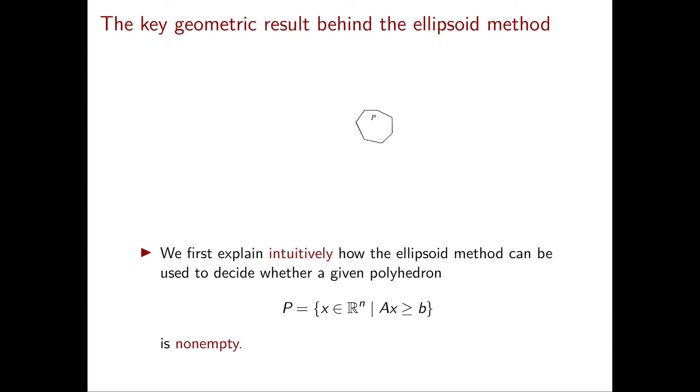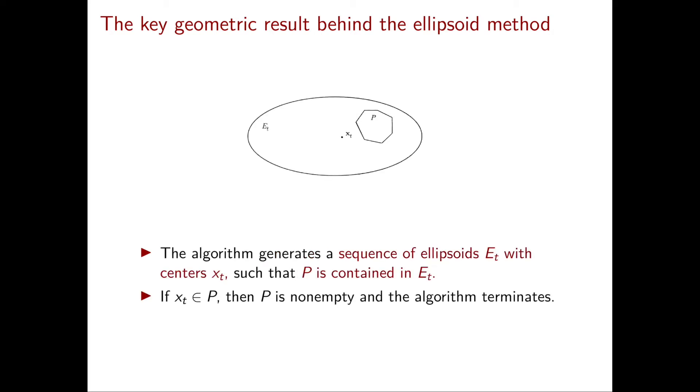but generally when we're given a system Ax greater than or equal to b we don't know if the corresponding polyhedron is empty or not. The first thing that the algorithm does is to generate an ellipsoid which is guaranteed to contain the polyhedron P.